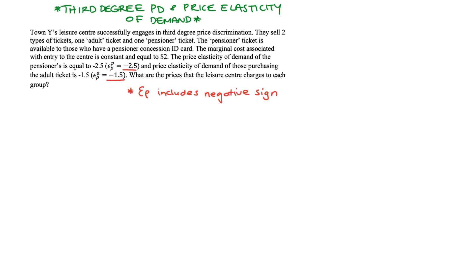So in our question, we have two types of consumer. We have those buying the pensioner ticket, we'll just call them pensioners, and those buying the adult ticket, we'll just call them adults. And actually in terms of elasticity, it will be the pensioners that are the more elastic group. Their elasticity is negative 2.5, which means that if we increase the price by 1%, then they reduce their demand by 2.5%. And that's a bigger response, a more elastic response compared to the adult group who would only decrease the quantity that they demand by 1.5%.